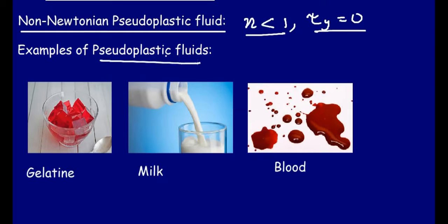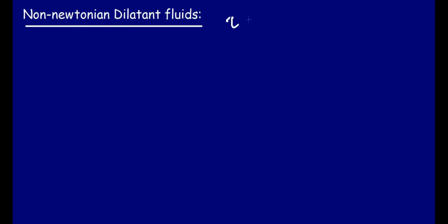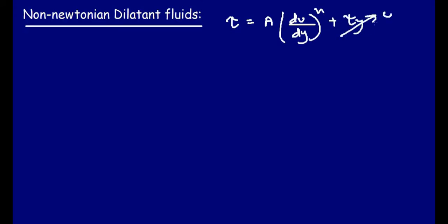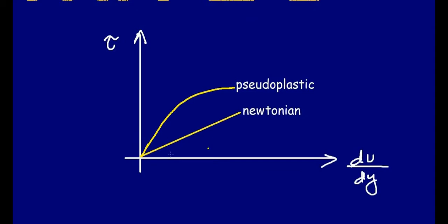After pseudo-plastic fluids, we have the non-Newtonian dilatant fluid. For the dilatant fluid, in the expression tau = A(du/dy)^n + tau_y, tau_y equals zero and n is greater than 1. If we plot the dilatant fluid on the rheological curve, we get a curve that rises more steeply than the Newtonian line. This is the dilatant curve.